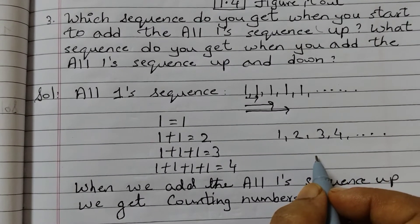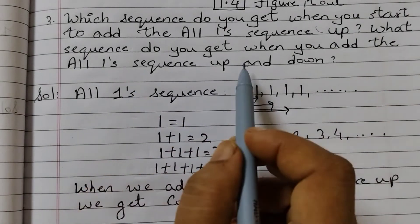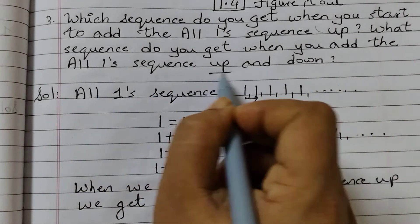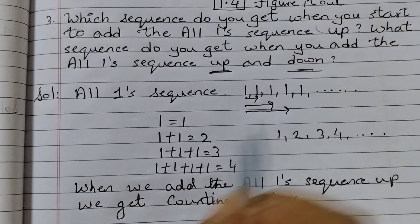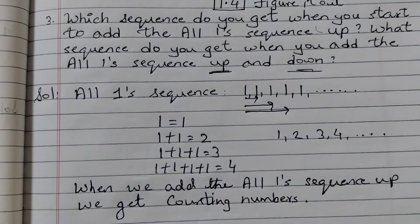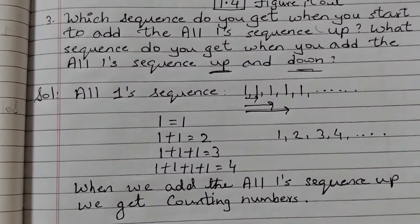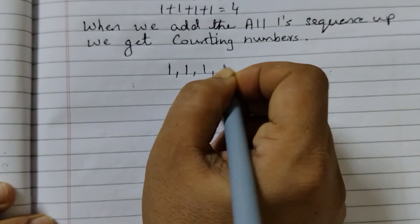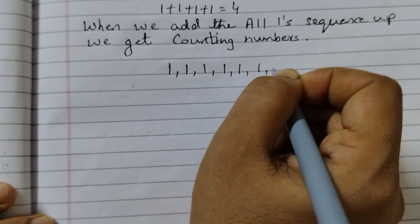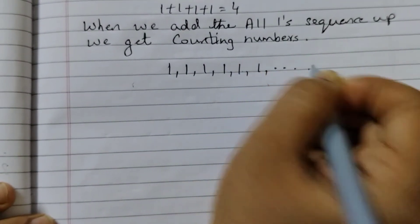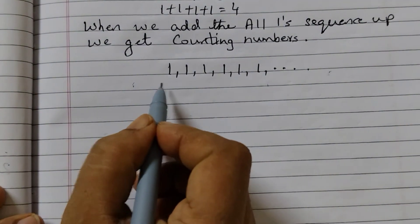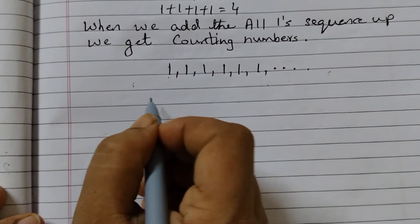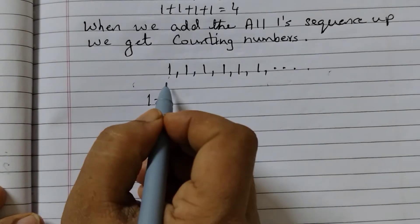The next part of the question is: what sequence do you get when you add the all ones sequence up and down? So we write the sequence 1, 1, 1, 1, 1 like this. Now we have to move up first and then down. The first one is 1, which equals 1.